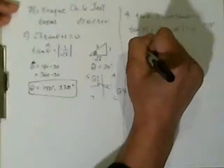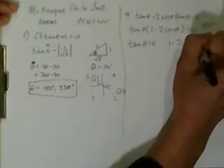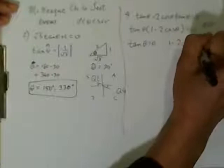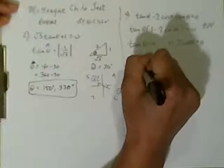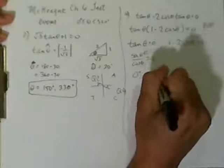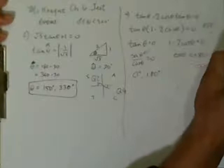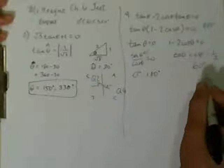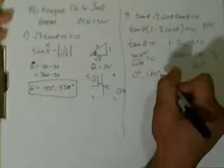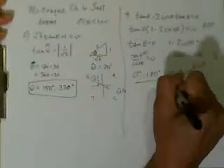So tangent theta equals 0, and 1 minus 2 cos theta equals 0. When is tangent theta equal to 0? When sine theta over cosine theta equals 0 — meaning the numerator must be 0. Sine theta equals 0 at 0 degrees and 180 degrees. For the second equation, cosine theta equals 1/2. The reference angle for that is 60 degrees, and cosine is positive in quadrant 1 and quadrant 4, so it's 60 degrees and 300 degrees.